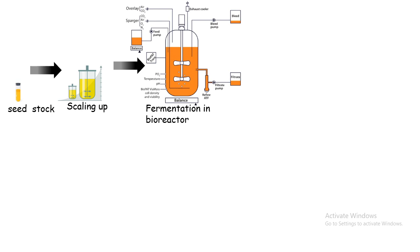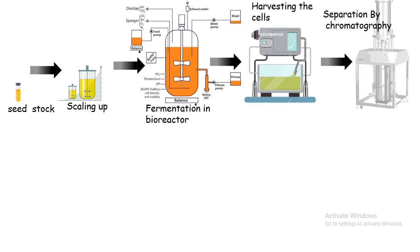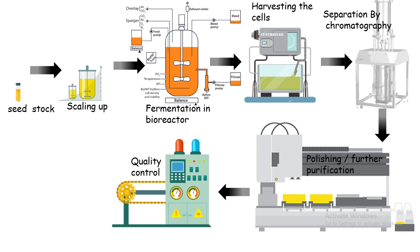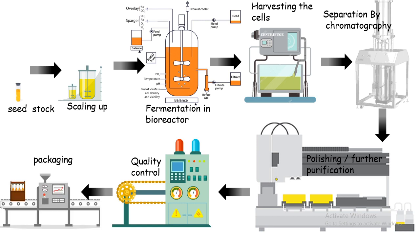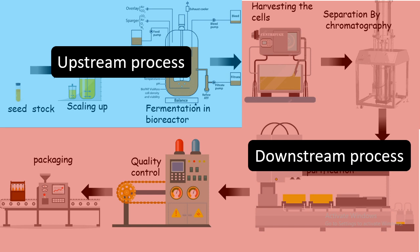In the bioreactor, the product is harvested — as bacteria grow in number, the product is also generated. After that, the product must be recovered: cells are harvested by centrifugation, followed by separation using chromatographic methods, then several rounds of purification and polishing, quality control to confirm the product is functional, and finally packaging and delivery. The cell-generation phase is called upstream processing, and all recovery and purification steps comprise the downstream processing.